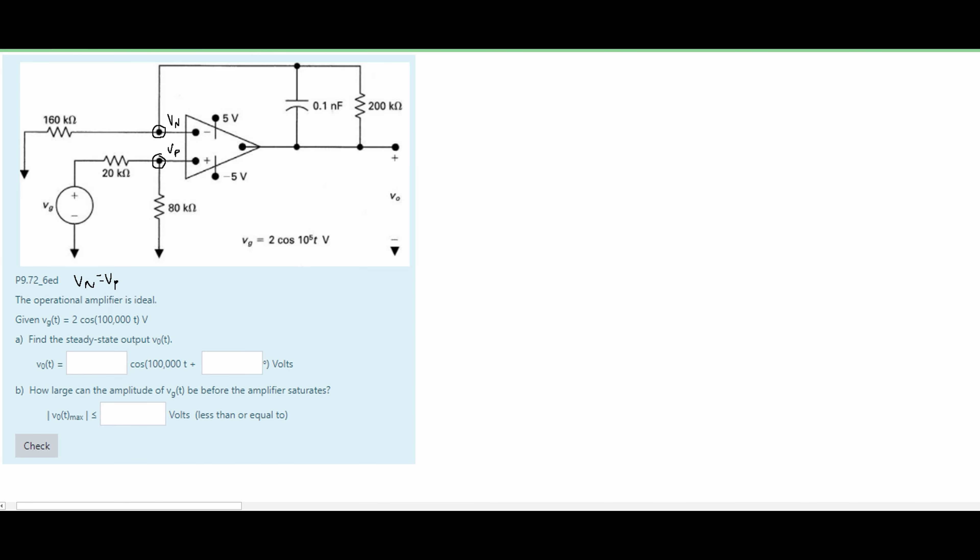So we're going to use a node voltage analysis. We know we have some current coming over this resistor here. We know that from our V0 we are going to have some negative feedback that's going back into our node this way. So we can add these together and then for our VP we're going to have some current flowing over this resistor and some current flowing over this resistor.